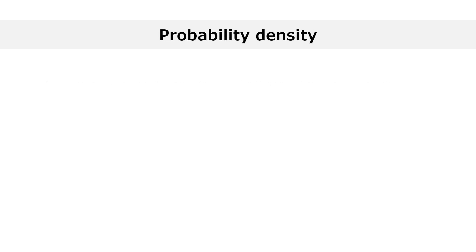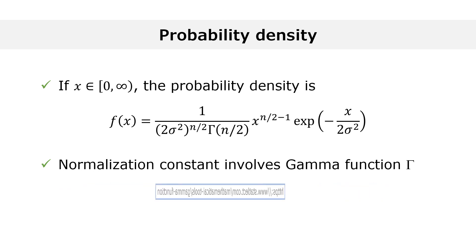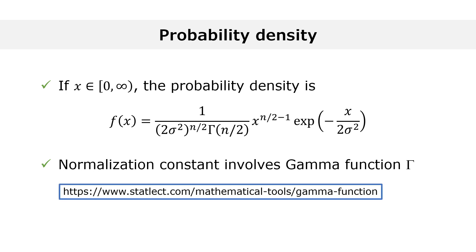The probability density function of a gamma random variable has a pretty complicated expression that depends on the two parameters n and sigma-squared. The normalization constant involves the gamma function, a function of one variable that is often used in probability and statistics. If you are not familiar with the gamma function, you can find a simple introduction to it on statlect.com, along with interactive calculators and charts that will help you get an intuitive grasp of the gamma function.